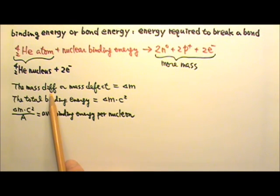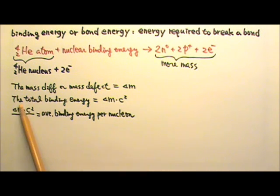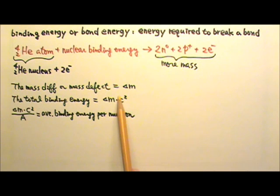If the mass difference, or called mass defect, is delta M, the total binding energy for an atom or a nucleus would be delta M times C squared, because E equals M times C squared.